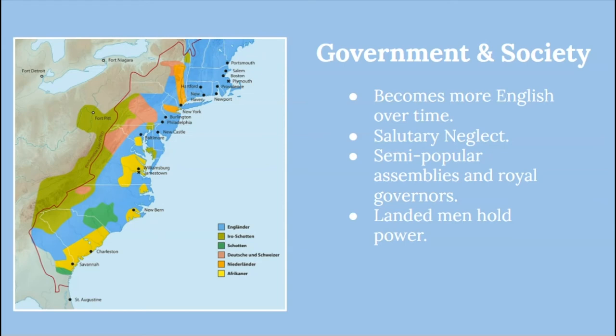Who held political power varied by region, but the general theme was that landed white men held power. An important thing to note is that in America more than really any other place in the developed world at this time, there was a broad distribution of land, which meant a large proportion of people — perhaps 25–50% of men — could actually vote or participate in politics compared to Europe. Of course, the only people expected to hold significant public office were the very wealthy elite — a deferential political order we'll talk about later.